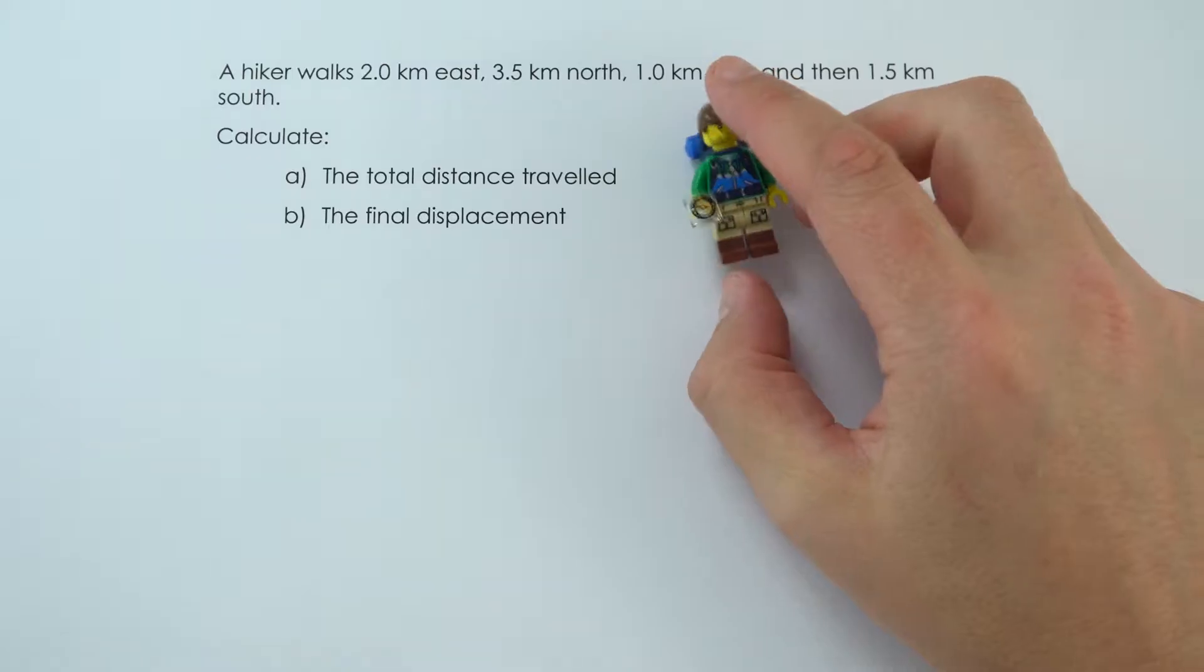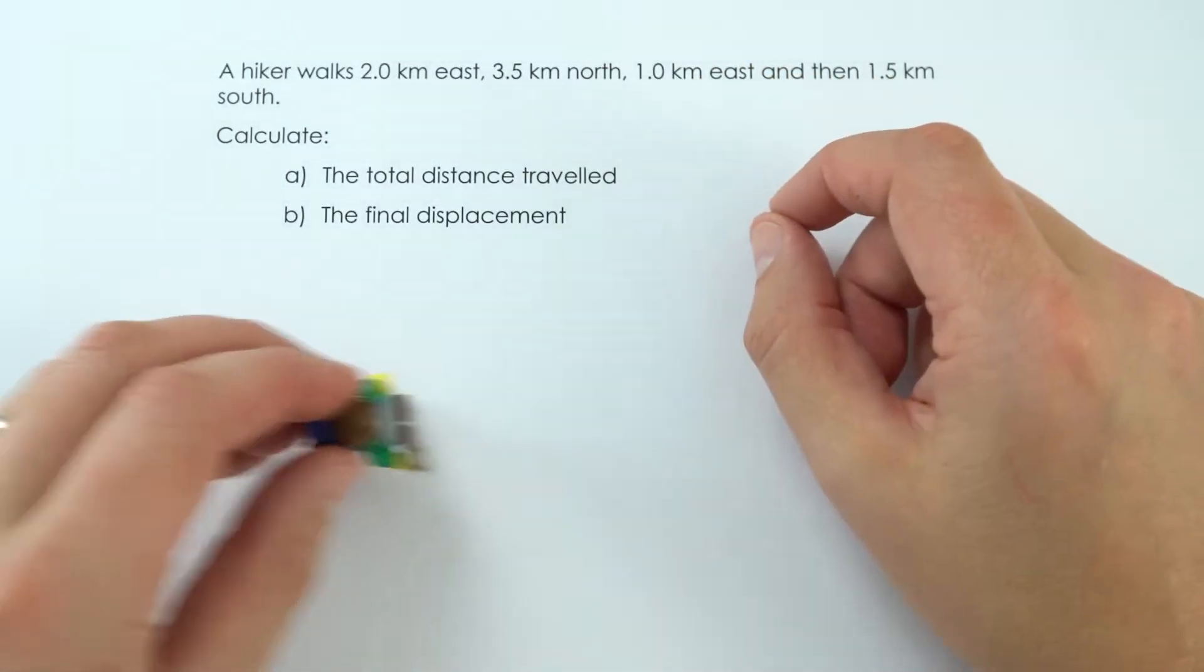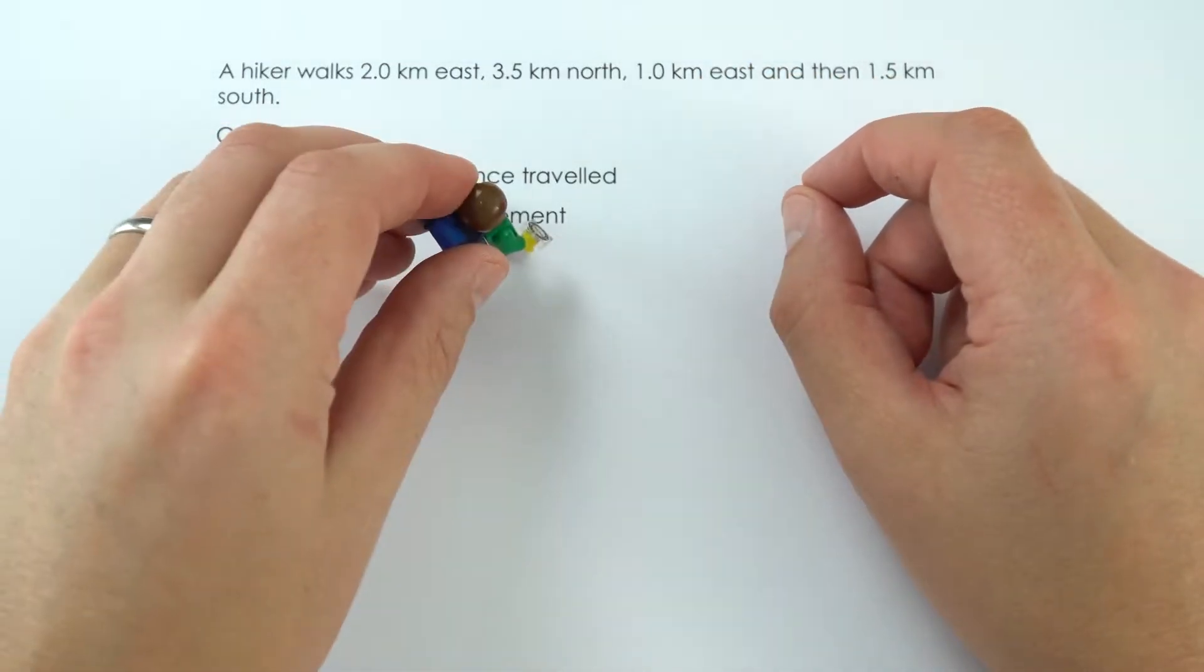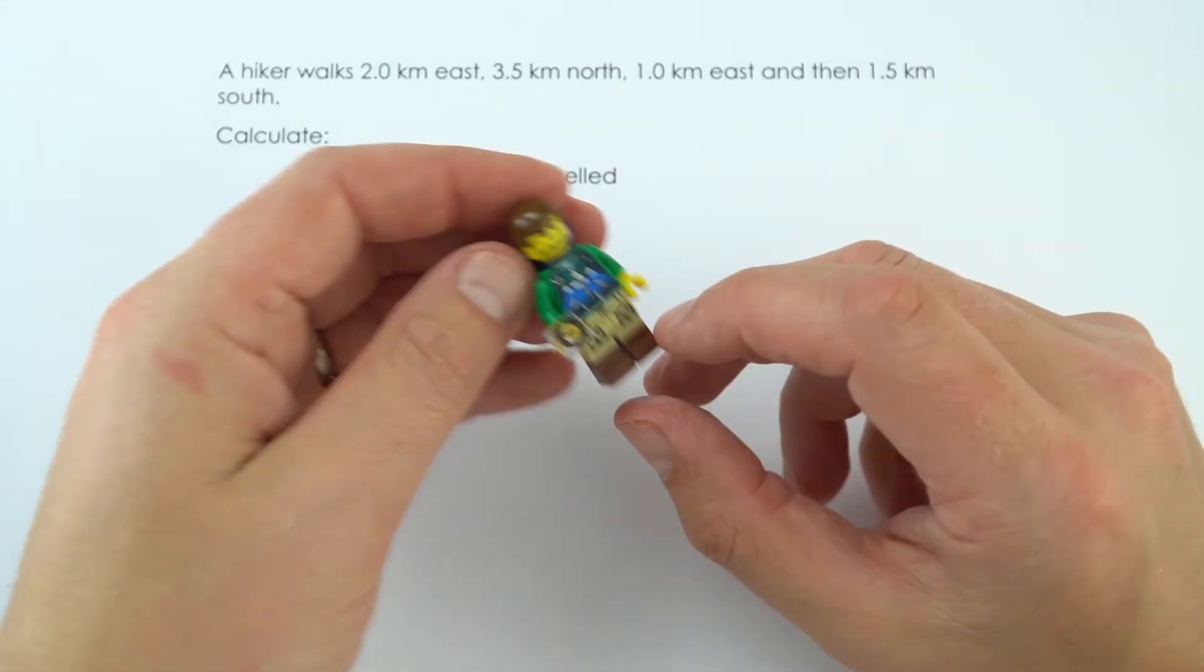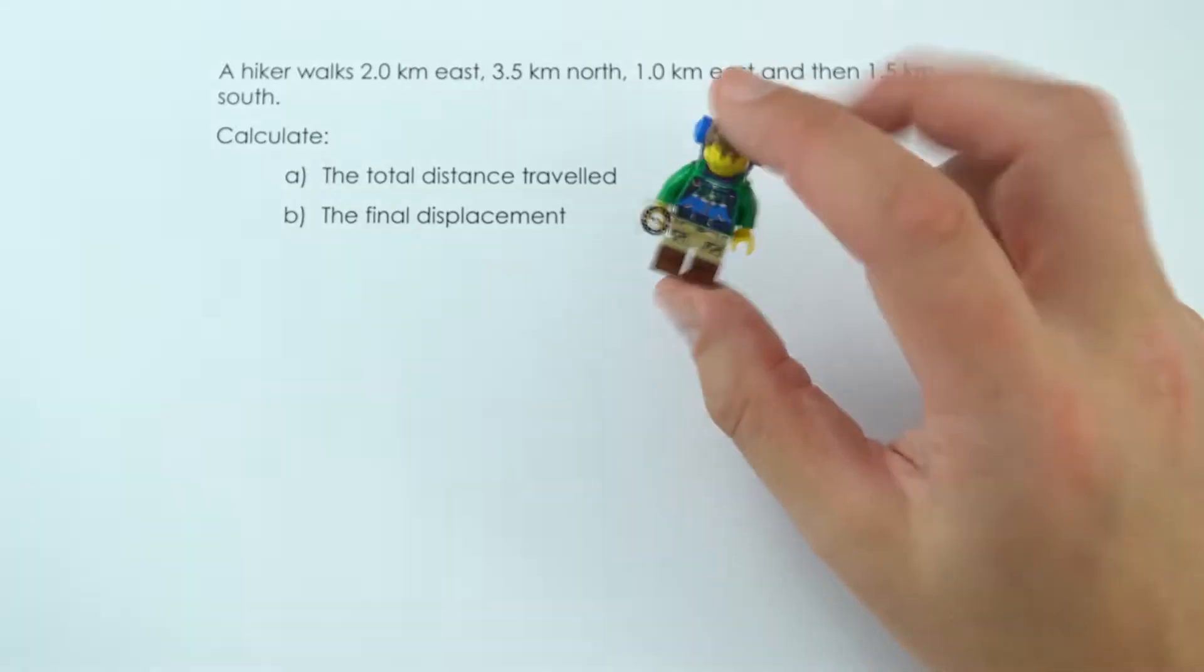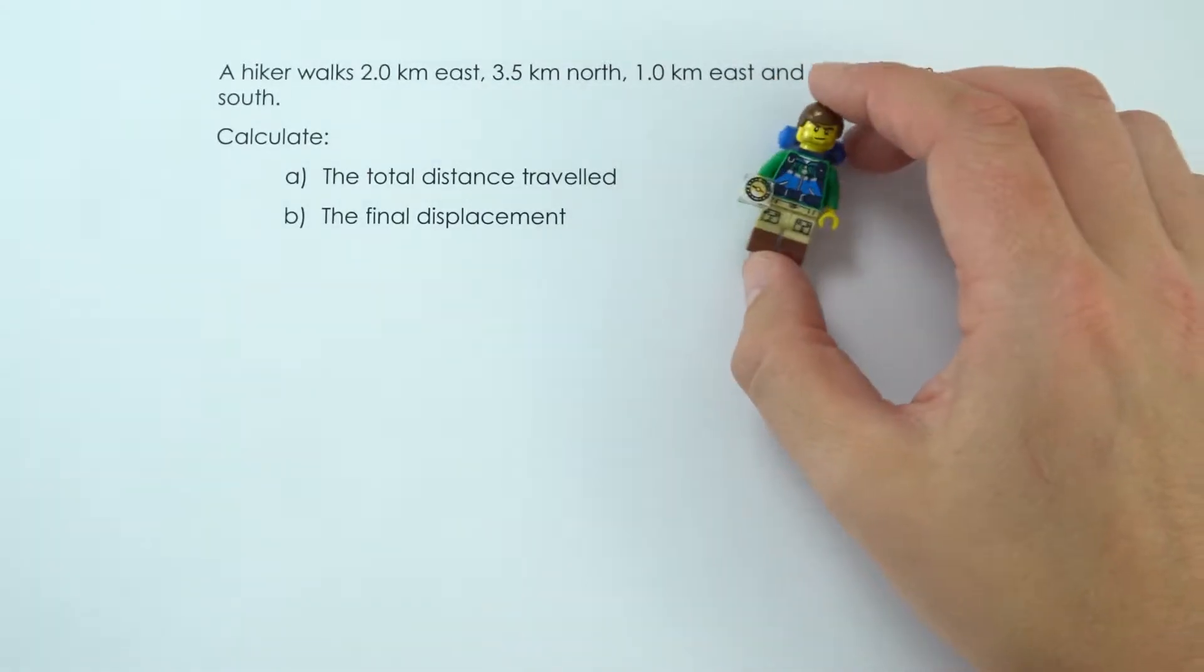This is a hiker who's been for a short walk. They went two kilometers east, three and a half kilometers north, another kilometer east, and then 1.5 kilometers south. It's a bit of a strange walk following these bearings, but we need to work out two things.